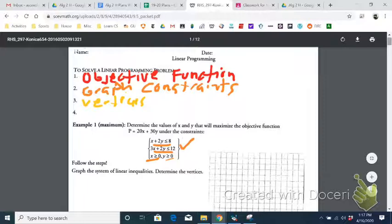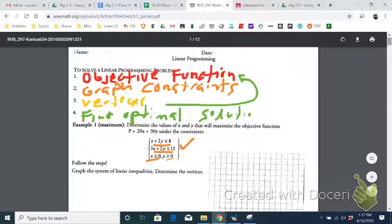And the last step is going to be take the vertices, plug them into the objective function, and find the optimal solution. So optimal means the maximum or minimum based on whatever you're trying to do. So let's do two problems together. The first one will be without context, and the second one will be more of a word problem.